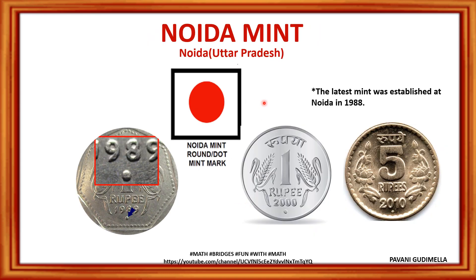Noida mint's symbol is a single dot — a round circular dot as the mint mark. If this dot is present, the coins were manufactured at Noida mint. Noida is the latest mint, established in 1988. For example, a year-2000 one-rupee coin has a dot, a 2010 coin also has a dot, and a 1989 rupee coin also has a dot, indicating they are all from Noida mint.